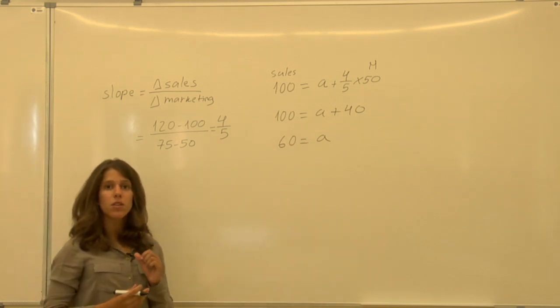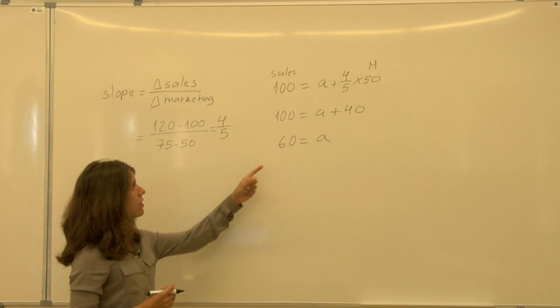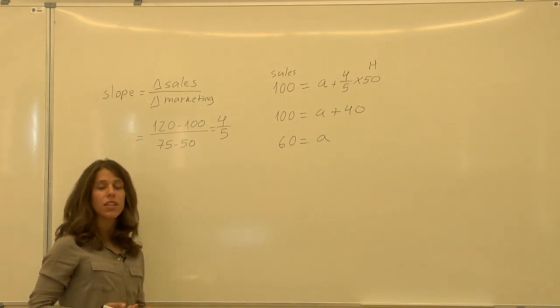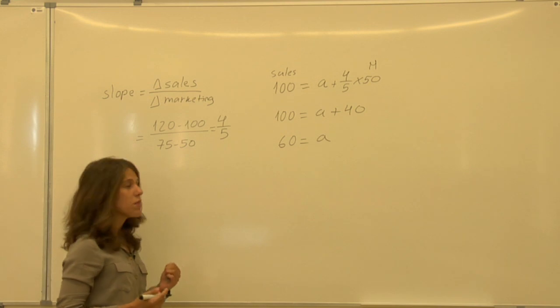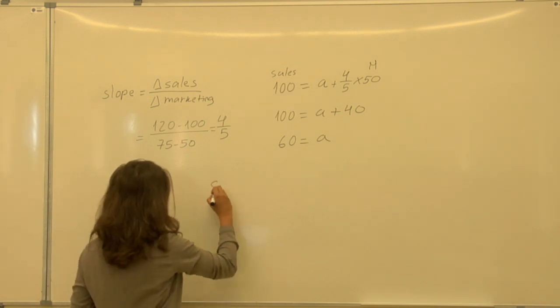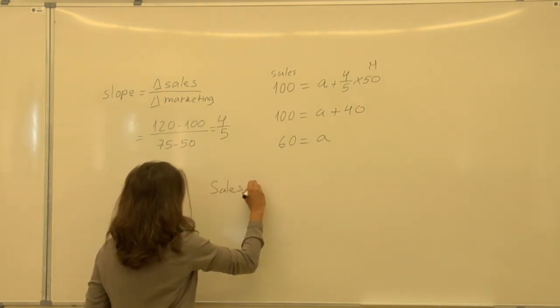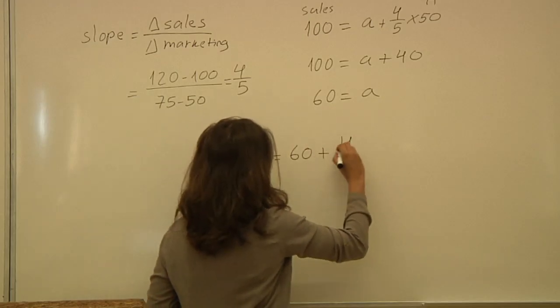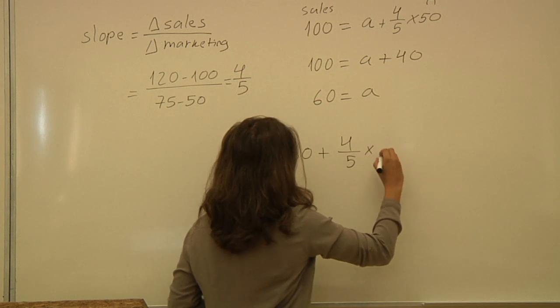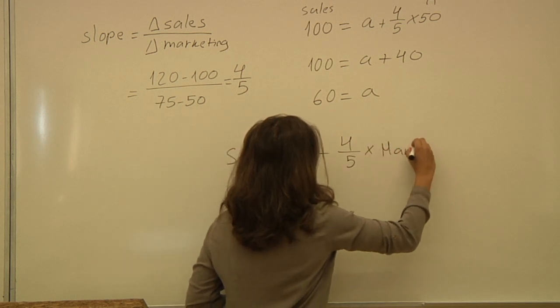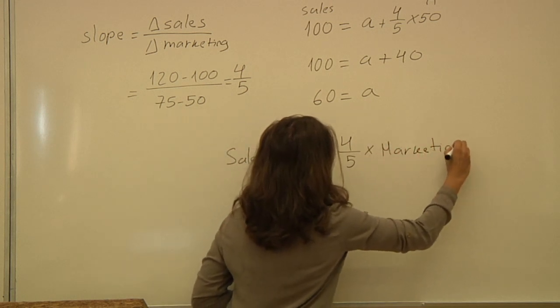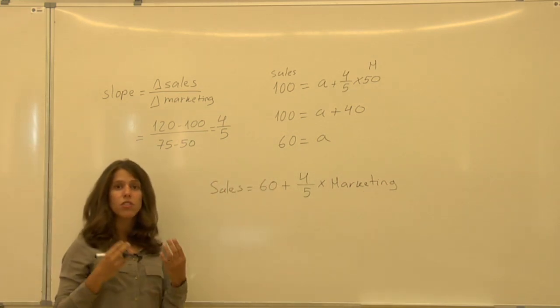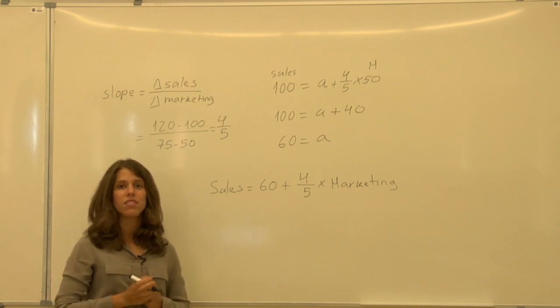If we spend 0 euros in marketing, we still get 60 euros in sales. Therefore, the mathematical expression of this last example is sales equals 60 plus 4 over 5 times the amount you spend in marketing. That is a simple example of a function that you can use in your business life.